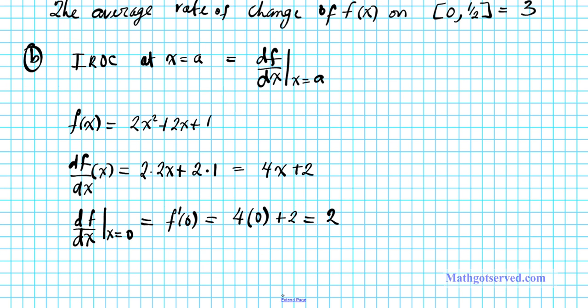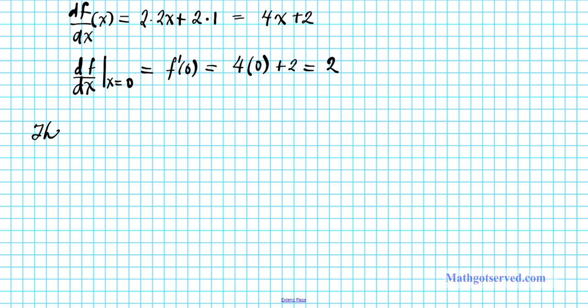And your final answer is 2. So let's go ahead and write down the meaning. The instantaneous rate of change of f of x at x equals 0 is 2. So there you have it.